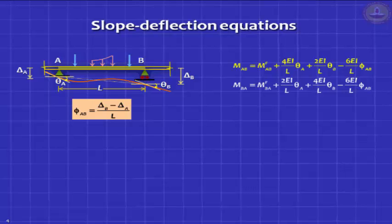And also similarly, you have the equation for MBA. MBA equals MF_BA plus 2EI/L*theta_A plus 4EI/L*theta_B minus 6EI/L*phi_AB. You can also write this conveniently in matrix form.